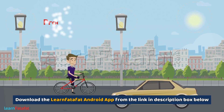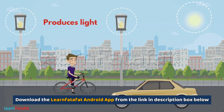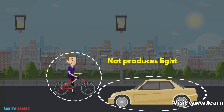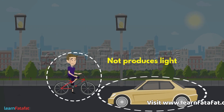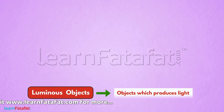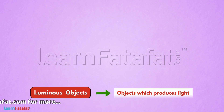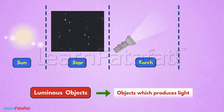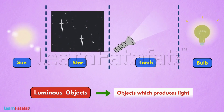Some of them produce light by their own while others could not. Those objects which produce light are called luminous objects. Sun, star, torch, and bulbs are all luminous objects.